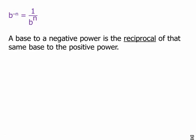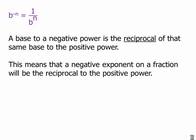So the rule is b to the negative n equals 1 over b to the n. Another way to say this is a base to a negative power is the reciprocal of that same base to the positive power. This means that a negative exponent on a fraction will be the reciprocal to the positive power. So the fraction p over q to the negative n equals q over p to the positive n. That's a really handy shortcut to know on the test.